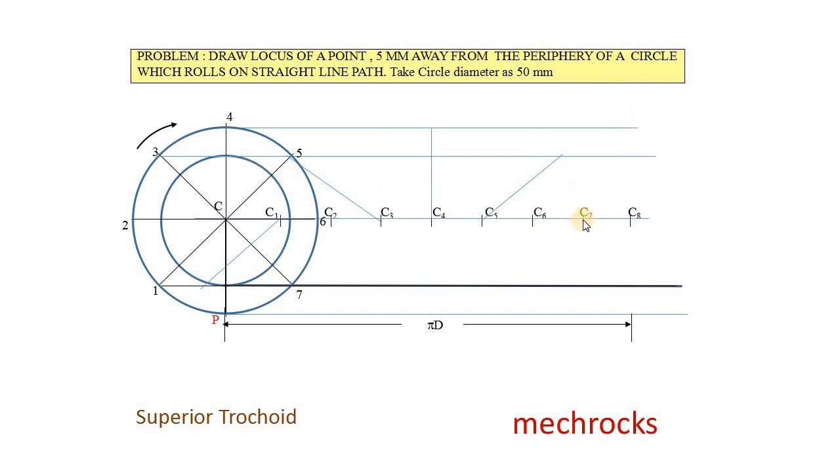Now, C7 as center, 30 as the radius. Cut the 1, 7th line like this. Now, C8 as the center, 30 as the radius. Cut the 8th line. That is the P line.